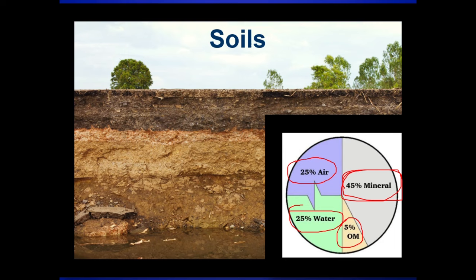When you look at soil, soils usually have something called horizons. The O horizon is the first layer at the top, and it contains that organic matter — that's what makes it so rich and fertile. Trees usually plunge their roots into the O horizon because they want to get that organic matter that has lots of nutrients.